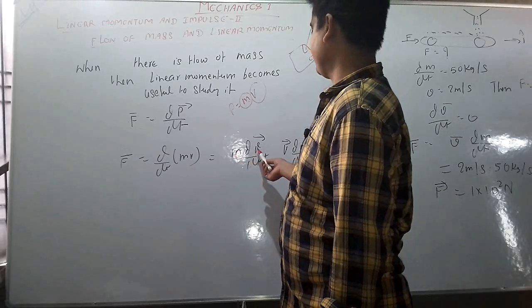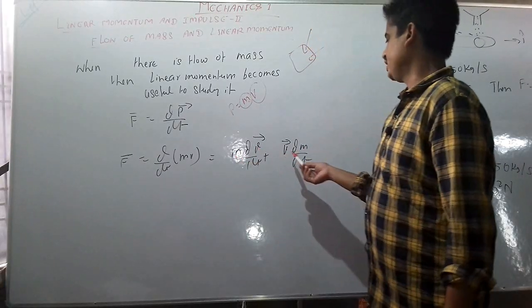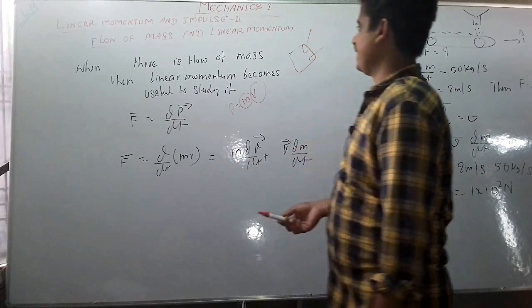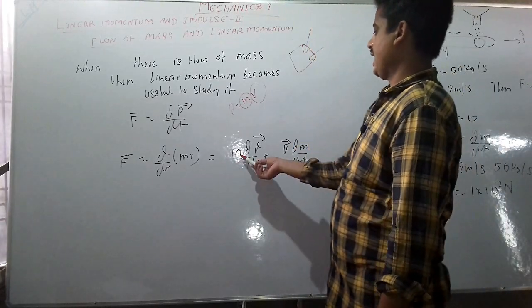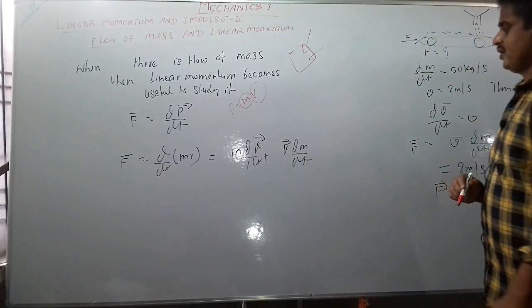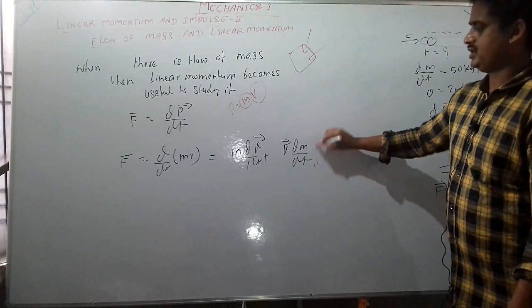So we keep m constant, differentiate v, again v constant, differentiate m. So this is the equation for variable mass or flow of mass: m dv by dt plus v dm by dt. Now I will show you how to use this equation.